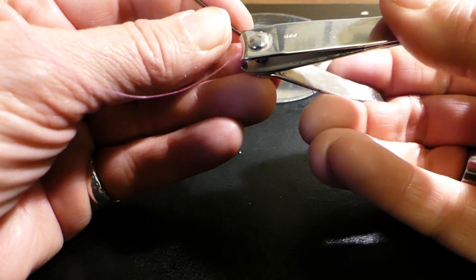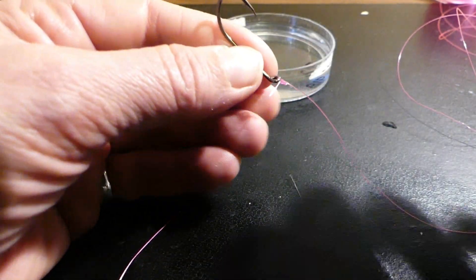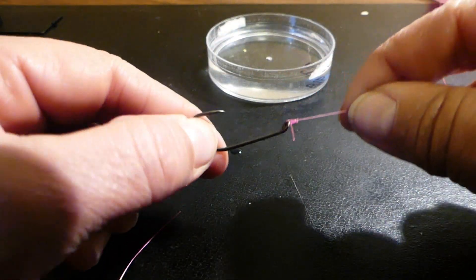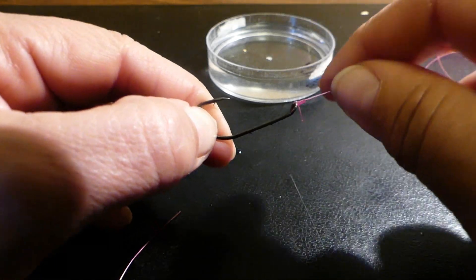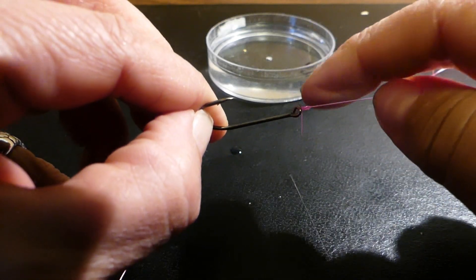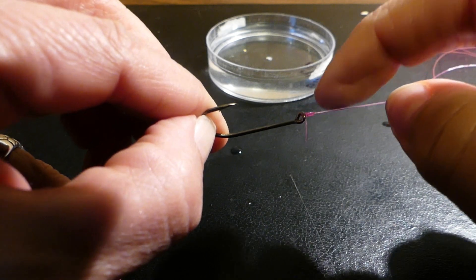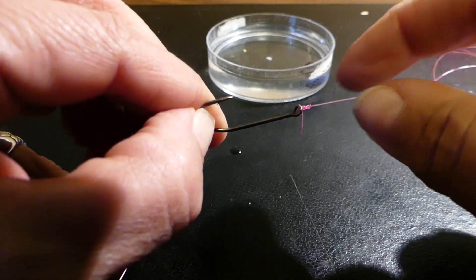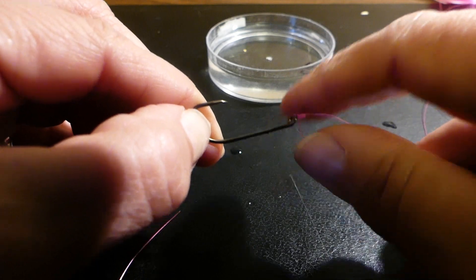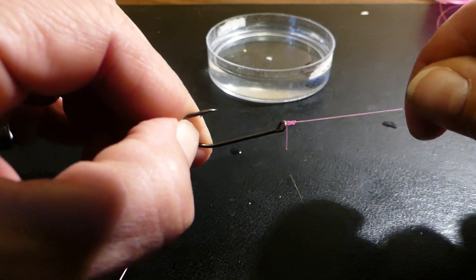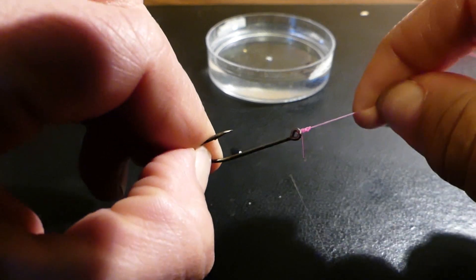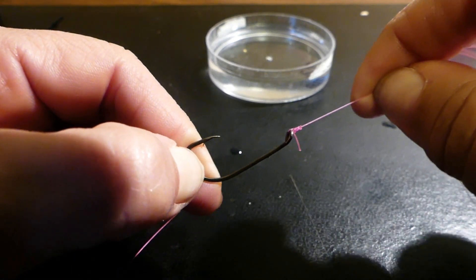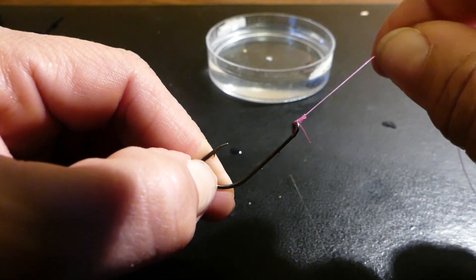Then we can cut the tag end off. I like to leave a little bit of a tag end on my knot, because that way the loops can still lock down on it. If the tag end slips underneath the coils or the loops, the knot can come undone. So I just like to leave a little bit here so that knot can continue locking down. That is your basic clench knot.